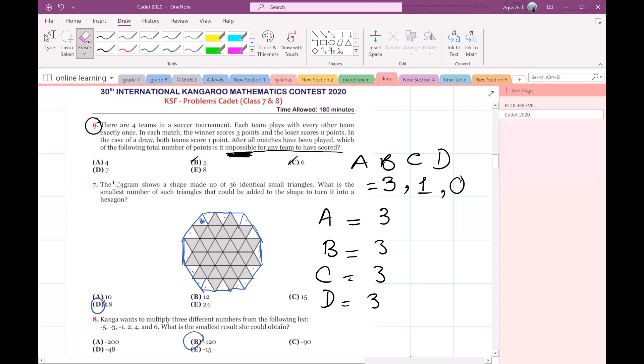In order to find the impossible number I will first write the possibilities. So, is 4 possible for a team to score? For example, if a team scores 1 in the first match, then scores 0 in the second one, and 3 in the third one.